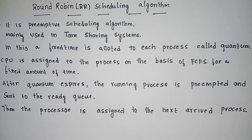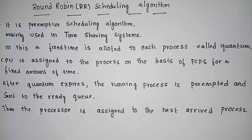We have discussed two types of scheduling: preemptive and non-preemptive. Round robin is called preemptive scheduling. This refers to the time to execute the process and the process of executing on the CPU.